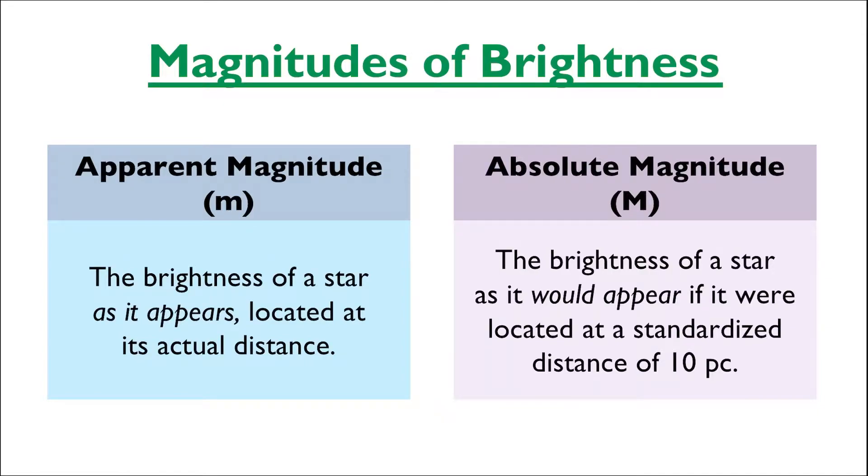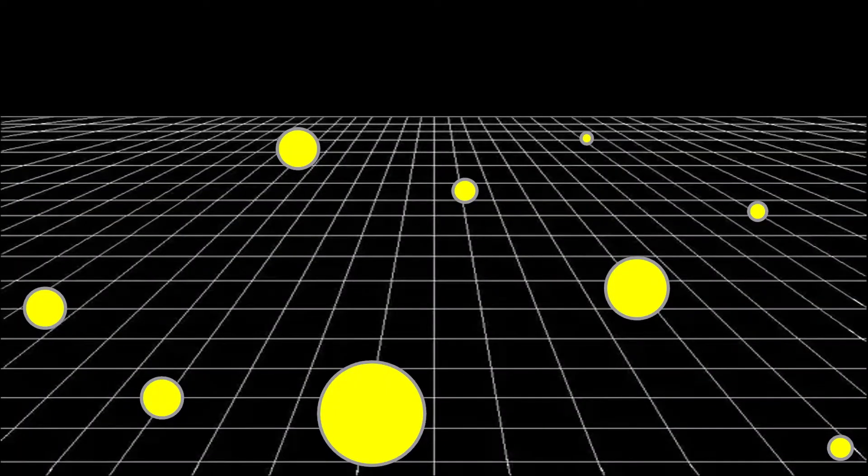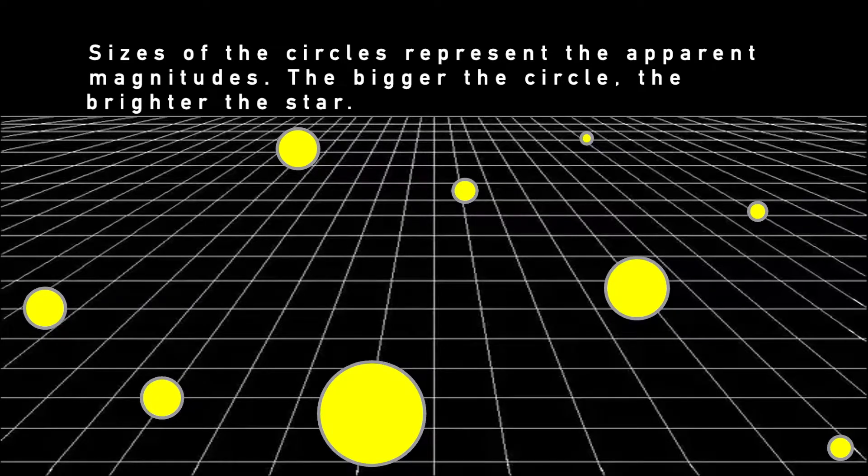We see the stars in the night sky the way we do because of two things: their brightness and their distance. The distance to the stars won't change much in our lifetimes, so the apparent magnitude is literally the brightness of the star exactly as we see it, exactly where it is.